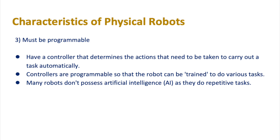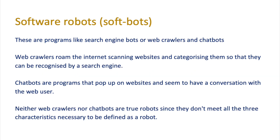As well as physical robots, there can also be software robots — programs like search engine bots, web crawlers and chatbots that operate through code. Web crawlers roam the internet scanning and categorizing websites so they can be recognized by a search engine. Chatbots are programs that pop up on websites and appear to have a conversation with the user. However, neither web crawlers nor chatbots are true robots, since they don't meet all three characteristics — they can only be programmable, and while they may use sensor data, they cannot move.